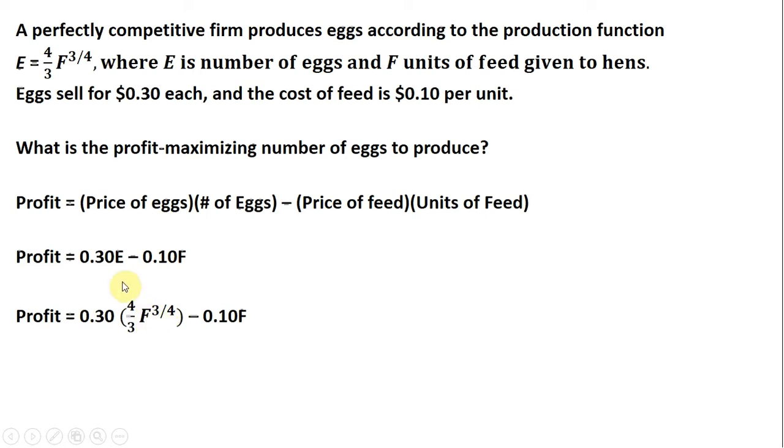Substituting in the production function for E, we have profit as a function of one choice variable, F. We take the derivative of profit with respect to F. Doing that, we get dProfit/dF = 0.30F^(-1/4) - 0.10 = 0. I set this derivative equal to zero because we're trying to maximize.